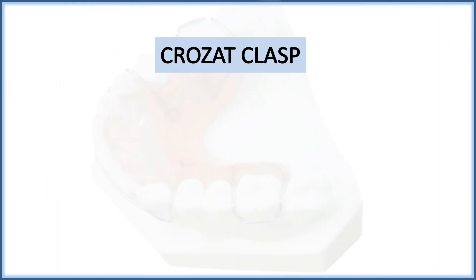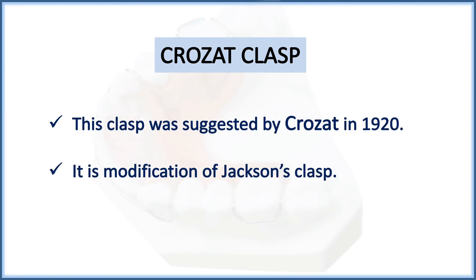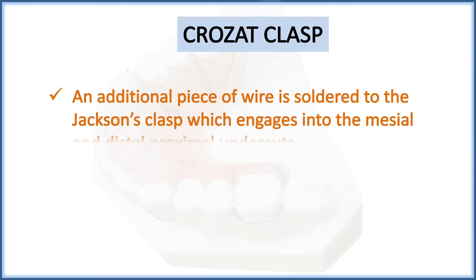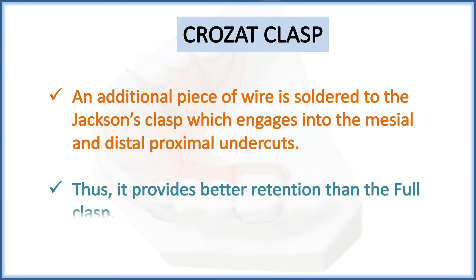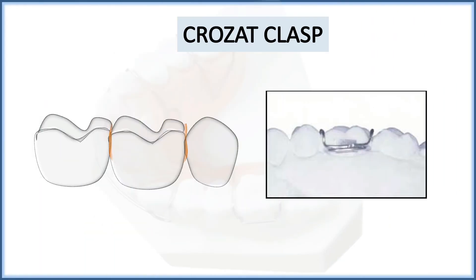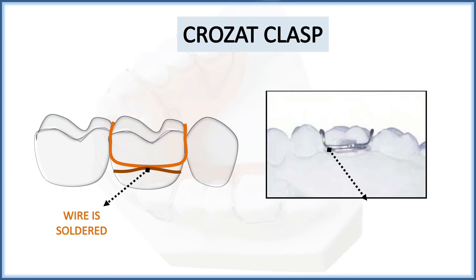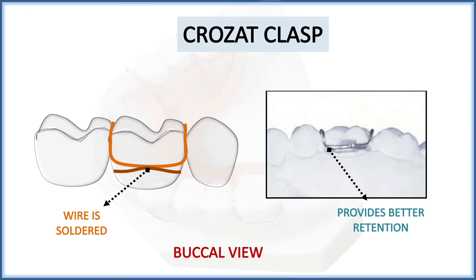The Closet clasp was suggested by Closet in 1920 and is a modification of the Jackson clasp. An additional piece of wire is soldered to the Jackson clasp which engages the mesial and distal proximal undercuts, thus providing better retention than the full clasp. Looking at the figure, you can see the additional wire soldered to the Jackson clasp engaging the mesial and distal proximal undercuts.